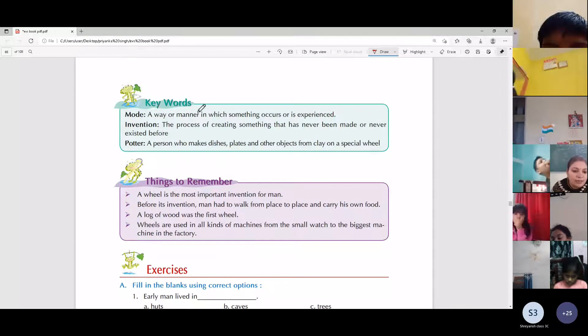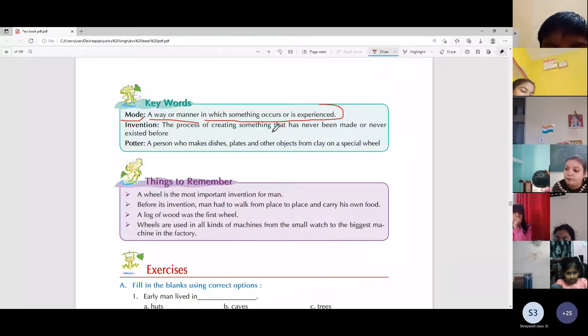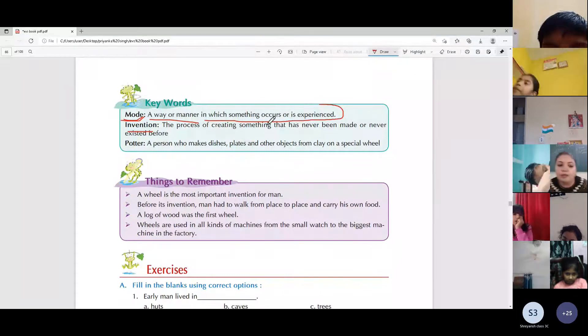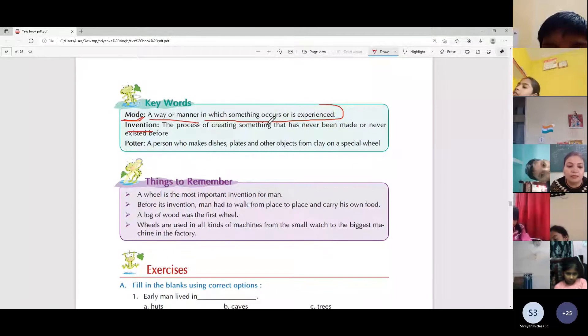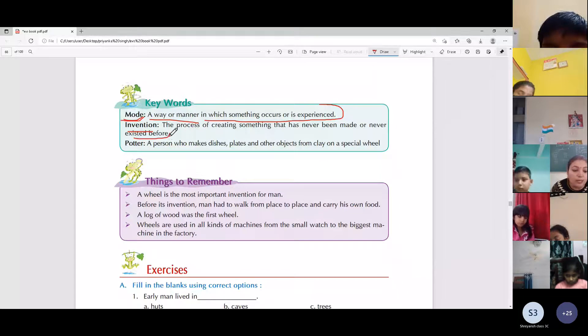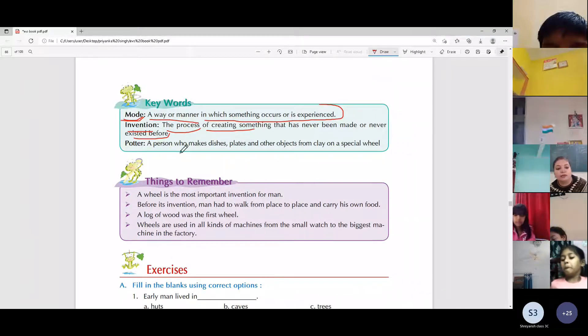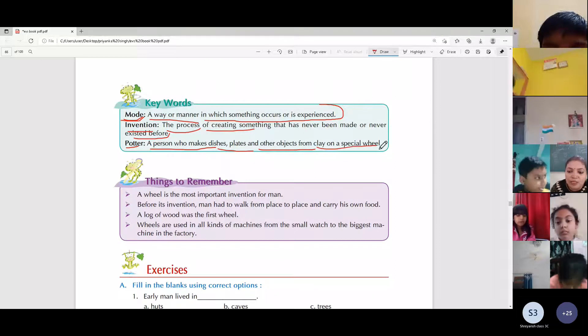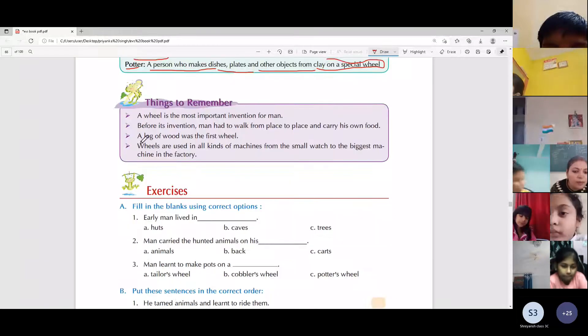Now keywords. There are three keywords. Mode: a way or manner in which something occurs or is experienced. Invention: the process of creating something that has never been made or never existed before. Invention means something that was not there before, a new process or action that is done for the first time. Potter: a person who makes dishes, plates and other objects from clay on a special wheel.